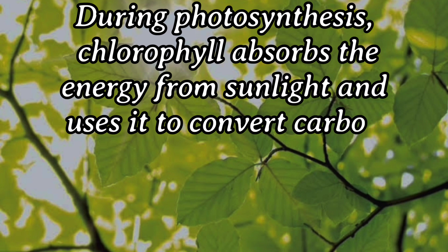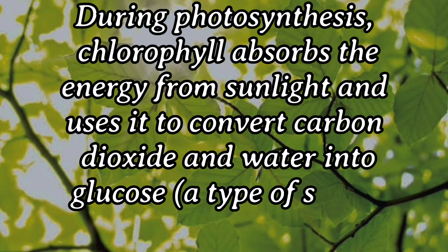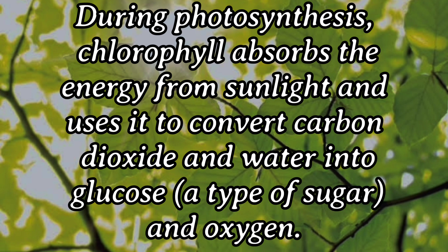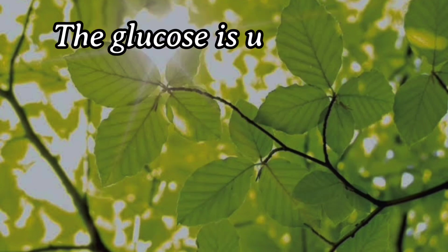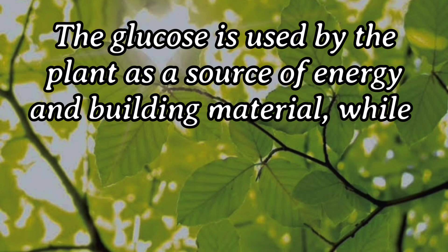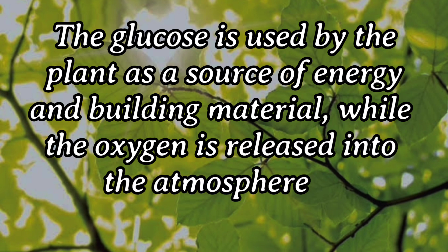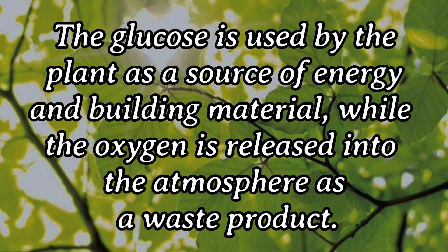During photosynthesis, chlorophyll absorbs the energy from sunlight and uses it to convert carbon dioxide and water into glucose, a type of sugar, and oxygen. The glucose is used by the plant as a source of energy and building material, while the oxygen is released into the atmosphere as a waste product.